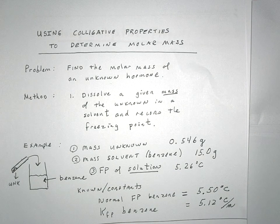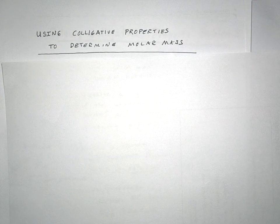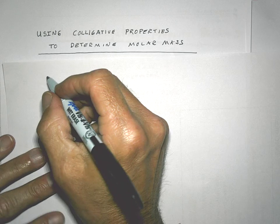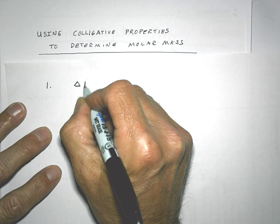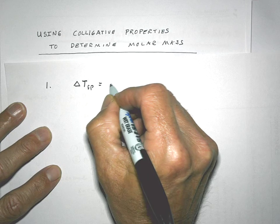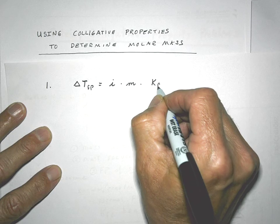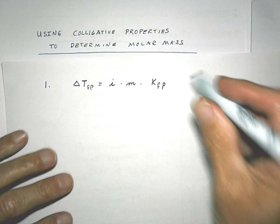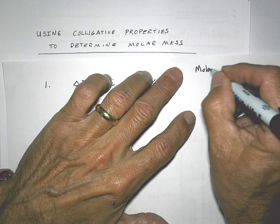So, with this information, what we're going to do is require a series of steps. Step one, we're going to rearrange our equation that we've seen. Looks like this. Realizing we're trying to find the molecular mass. Now, that's what we have to keep in mind, the big picture. We're trying to find the molar mass of this unknown.